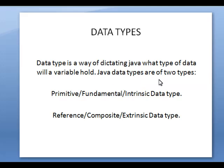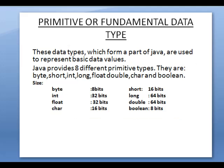Java data types are of two types. First one is primitive, otherwise called as fundamental or intrinsic data type. Second one is reference, composite or extrinsic data type. Now we are going to see what are primitive data types or fundamental data types. These data types form a part of Java and are used to represent basic data values. Java provides eight different primitive types: byte, short, integer, long, float, double, character and boolean.